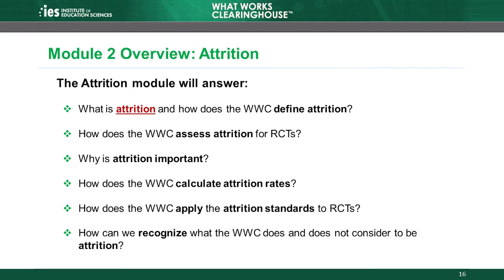The second module introduces the concept of attrition, which is the loss of participants from a research study, and explains how the WWC assesses attrition for RCTs. This module discusses how the WWC defines attrition and why attrition is important. We also walk through how to calculate attrition rates, apply the attrition standards to RCTs, and recognize what the WWC does and does not consider to be attrition.